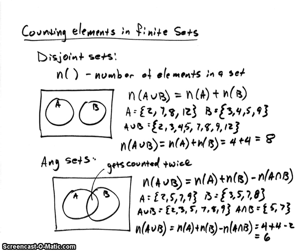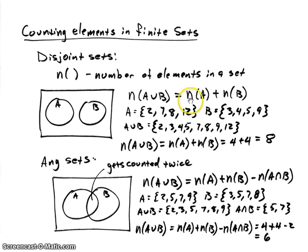When we're counting elements of a set, we're talking about finite sets, so there's a finite number of elements. There are different situations when counting elements. First, let's look at disjoint sets. We have two sets, A and B, and they're disjoint. If we want to know the number of elements in the union of those two, the union includes all the elements of A and all the elements of B, and therefore the number of elements in A union B will just be equal to the number of elements in A plus the number of elements in B.